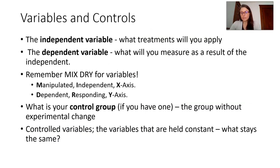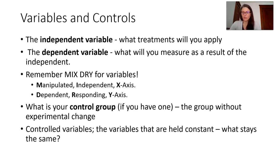We said in your prediction you have to define the relationship between independent and dependent variables. But what are all these variables? What's the control? And what are you controlling in the experiment with all your variables? So let's dig into this a bit.